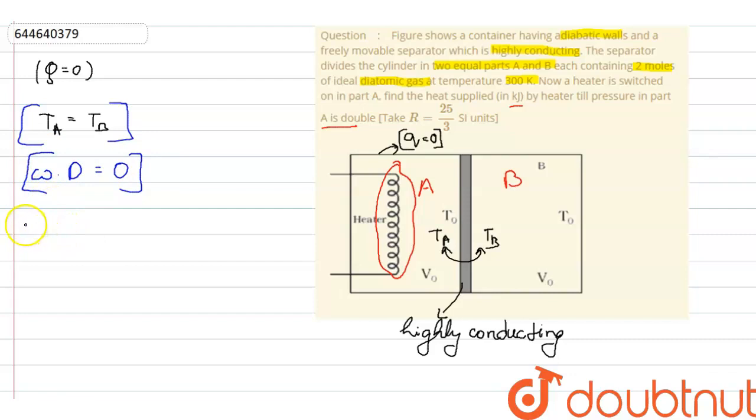Now, we can write DQ is equals to N CV DT because volume is constant as a number of moles is 2 into 2.